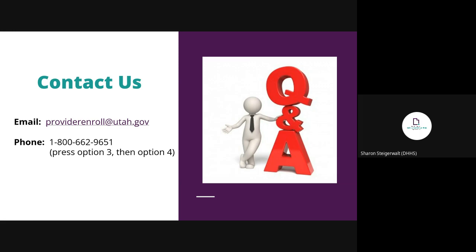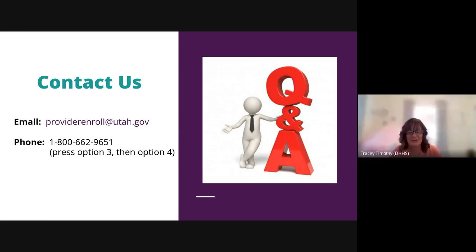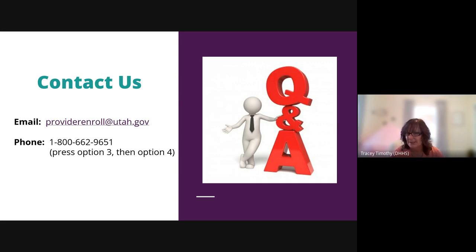The next question: how do you change your clearinghouse? If you're adding a new one, go into Step 8 first and make sure you add your submission choices. In Step 9, if you're choosing a billing agent, that is where the billing agent is required. If you have an existing billing agent and want to add a new one, go to Step 9, end-date the old affiliation, and add the new one with the new trading partner ID numbers (TPNs).